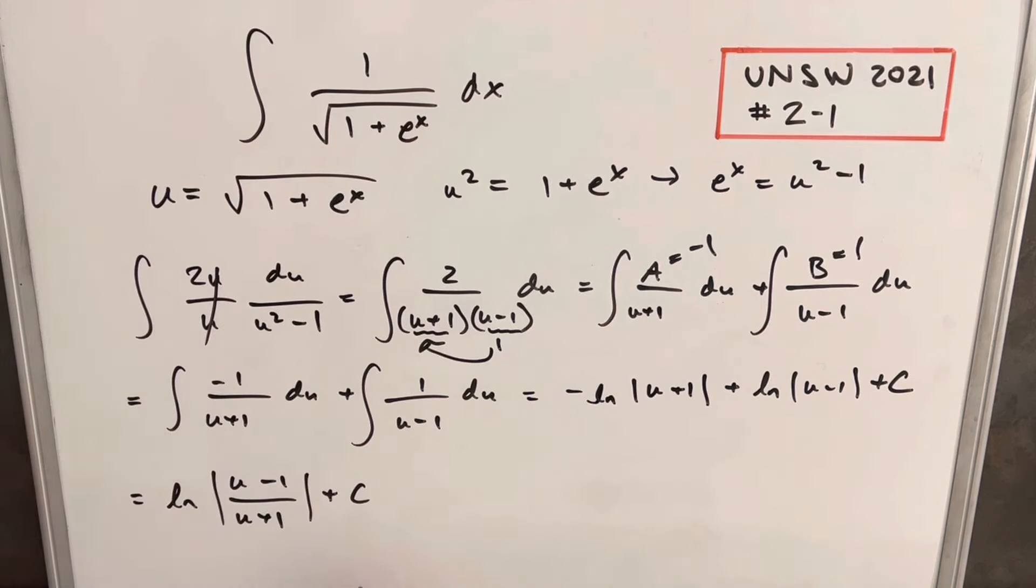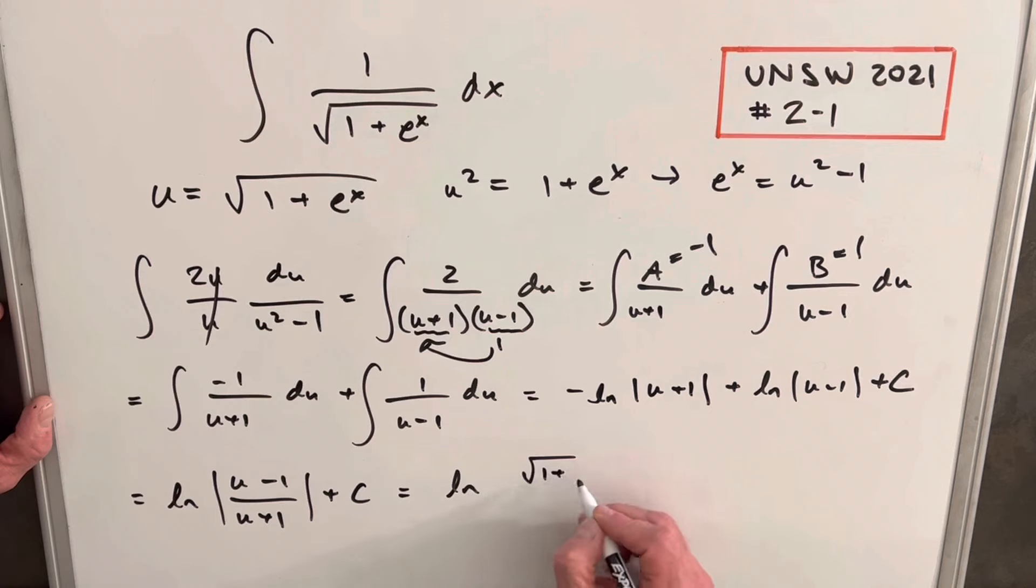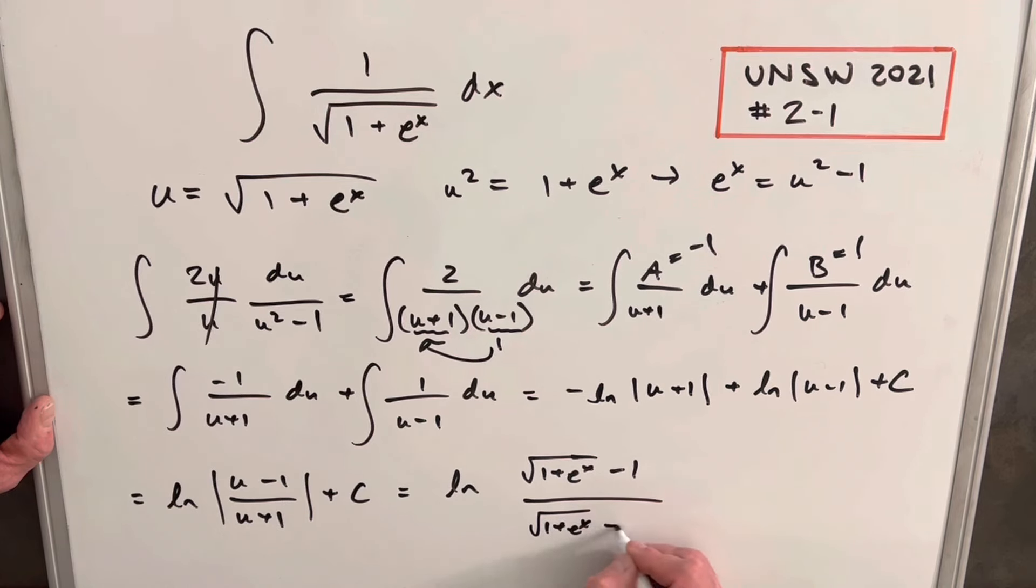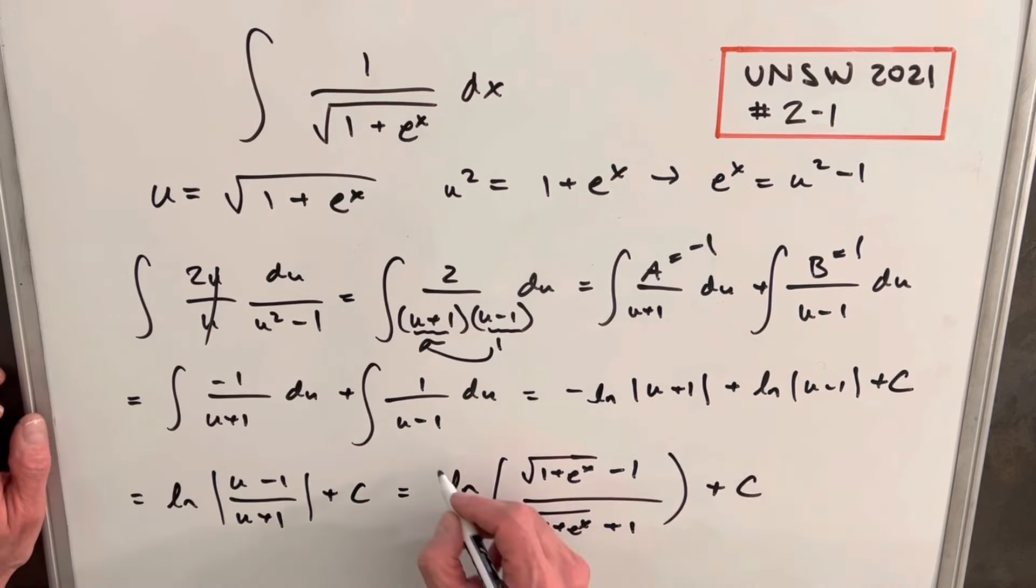To finish, we back-substitute u. Our answer is ln of (square root of 1 plus e to the x minus 1) over (square root of 1 plus e to the x plus 1). We don't need absolute values since these are always positive. Adding plus C, and we're done.